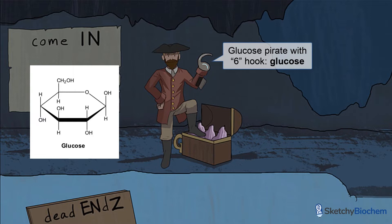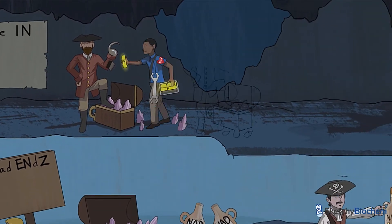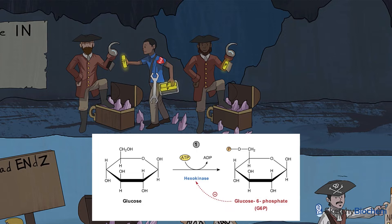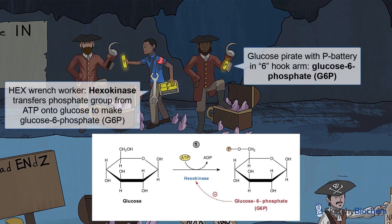Also notice he's got a gnarly six hook — that's to mark carbon number six. If you look real close, you'll notice the battery slot right beneath. In step one, hexokinase uses ATP to phosphorylate glucose to make glucose-6-phosphate, better known as G6P. You'll see a hex wrench worker taking a phosphate battery from his ATP battery pack and adding it to the six-hook arm of the glucose pirate to make G6P. He's wearing a kind button to remind you that he's a kinase, which transfers phosphate groups from ATP to substrates. We'll be using kind buttons to represent all kinase characters.